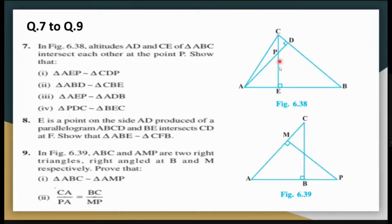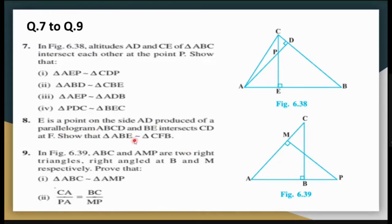For question 7, AD and CE are altitudes of triangle ABC intersecting at point B. Using one common angle and one 90-degree angle, the triangles can easily be proved similar by AA. For question 8, E is a point on side AD produced of parallelogram ABCD. Produce AD to E and join BE. BE intersects CD at F. You can show triangle ABE is similar to triangle CBF using vertically opposite angles and alternate interior angles.